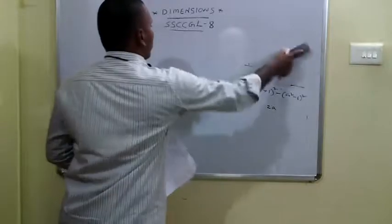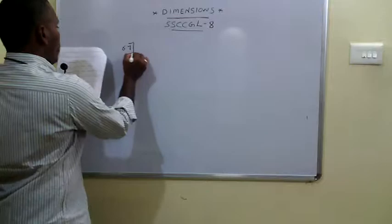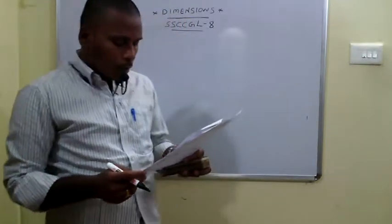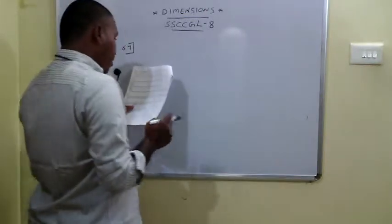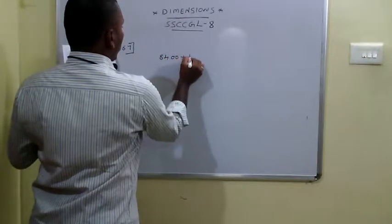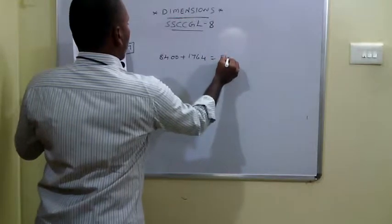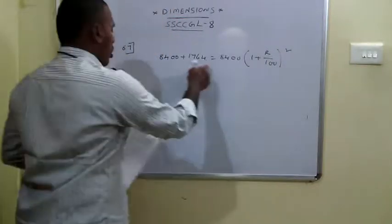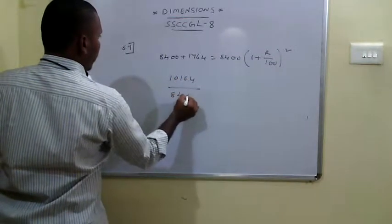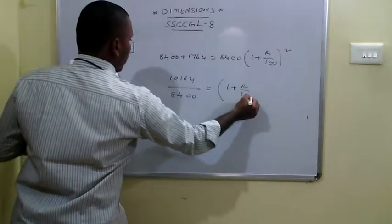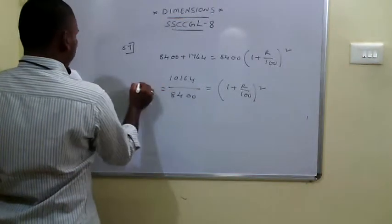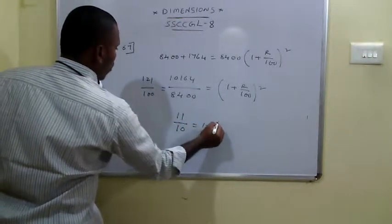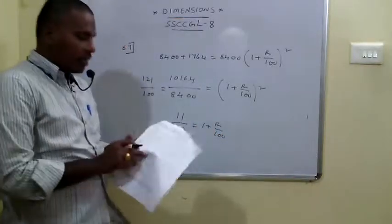The 67th problem: a sum of 8400 rupees gives compound interest of 1764 in 2 years compounded annually. The final amount is 8400 plus 1764 equals 10164. Using the formula A equals P into 1 plus R by 100 squared: 10164 divided by 8400 equals 1 plus R by 100 squared. Simplifying gives 121 by 100, so 11 by 10 equals 1 plus R by 100, giving the rate of interest as 10 percent.